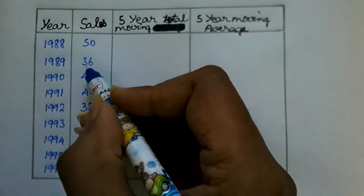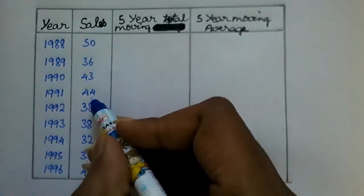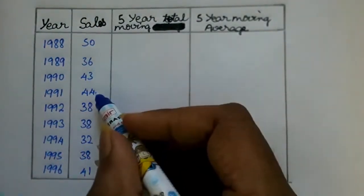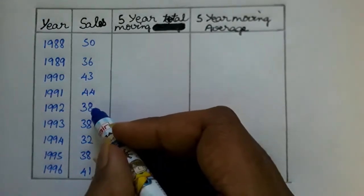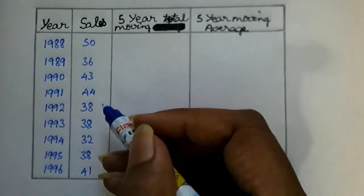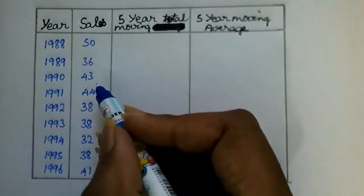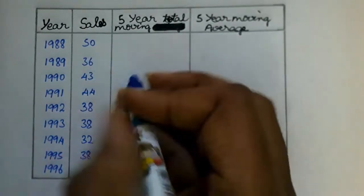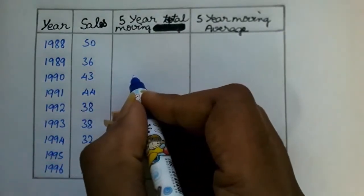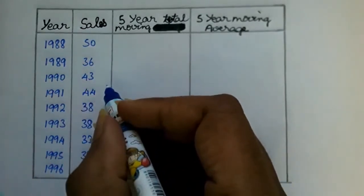We add the first 5 values: 50 plus 36 plus 43 plus 44 plus 38. We then identify the middle value in the first 5 rows to place the moving total.